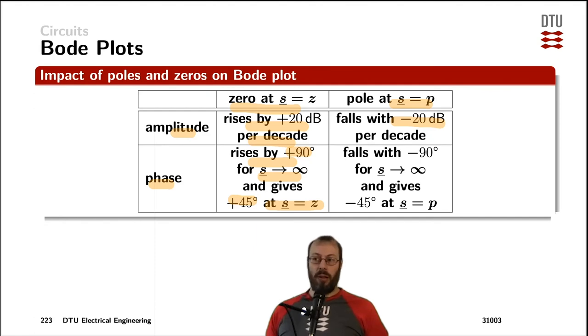And equivalently for a pole, the phase is falling with 90 degrees per pole for s approaching infinity. And at the exact frequency of the pole, the phase of the transfer function falls by 45 degrees.